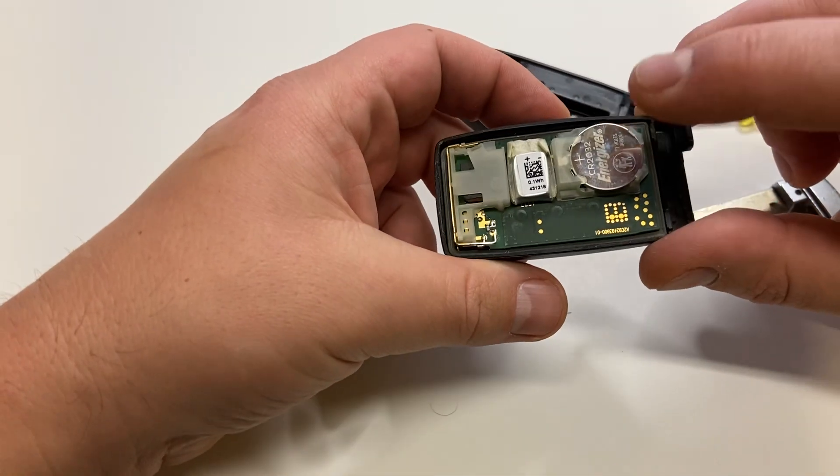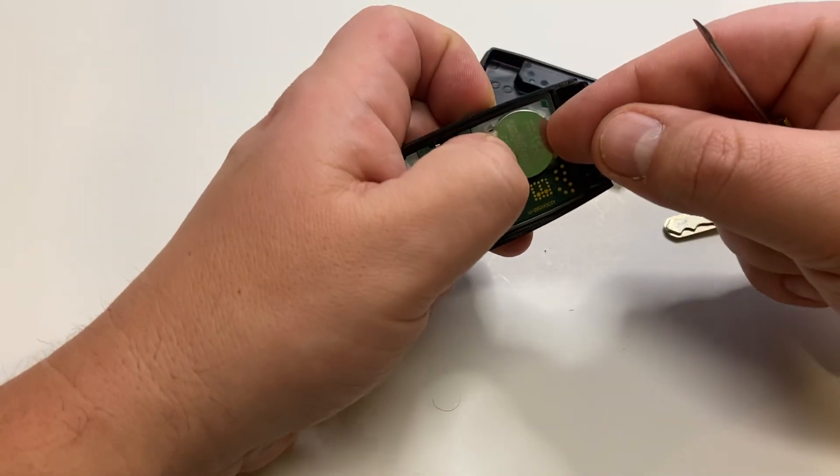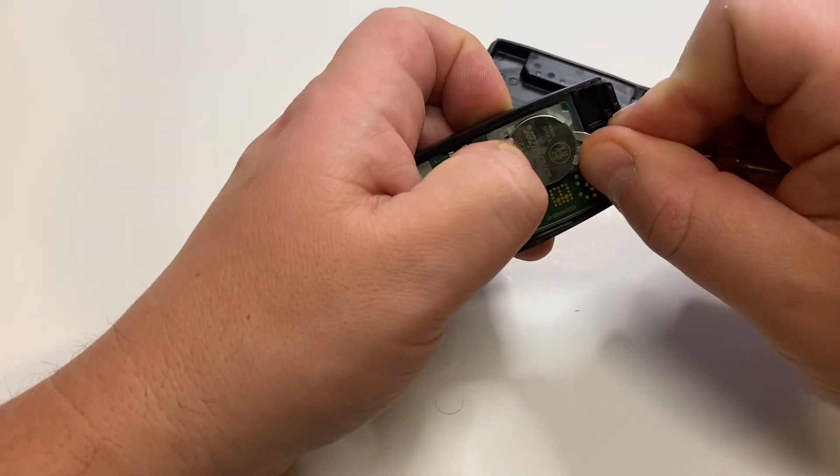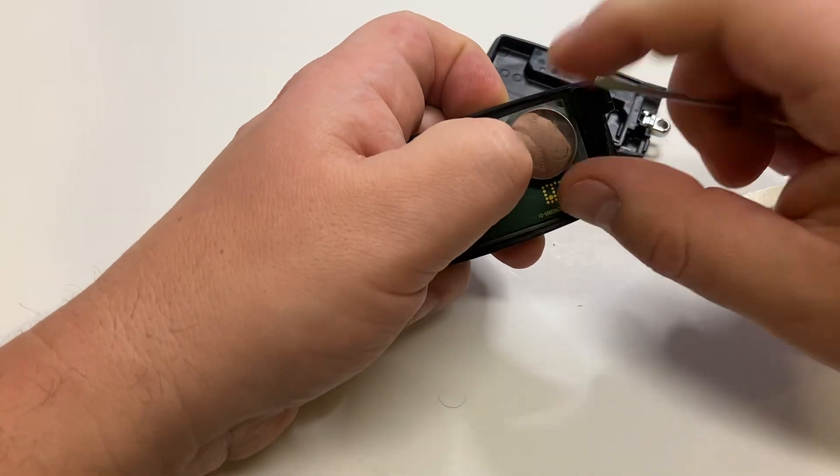As you can see, the battery is right here. You can remove it by holding this side and pulling up the battery.